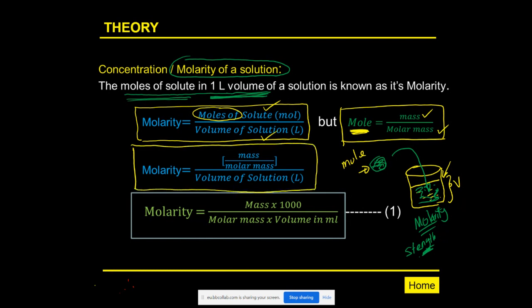The molarity can be calculated as: M = (mass / molar mass) / volume in liters. If you prefer to work in milliliters directly, you can use the equation with a factor of 1000 in the denominator, which converts milliliters to liters.